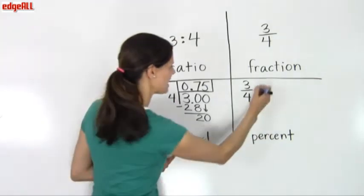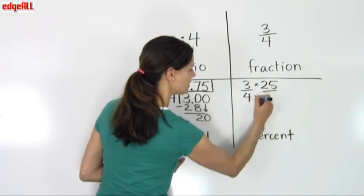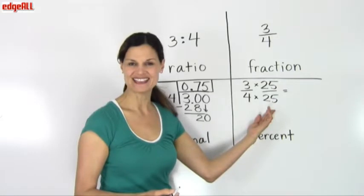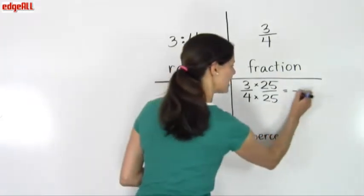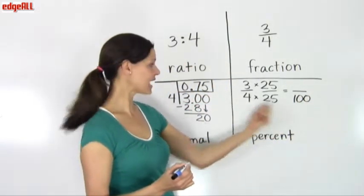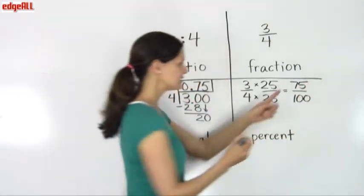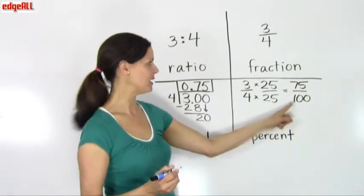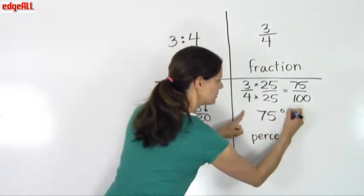And so if I multiply both top and bottom, both numerator and denominator, by 25, that's the same as multiplying by 1, so it doesn't change the value, and that makes my denominator equal to 100. 4 times 25 is 100. And 3 times 25 is 75. So 75 out of 100 gives me the percentage form of 3 fourths, which is 75 percent.